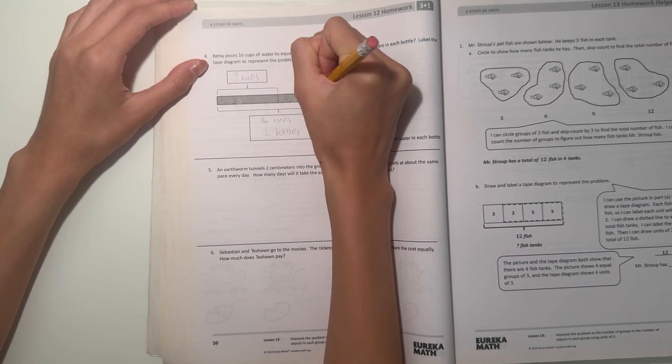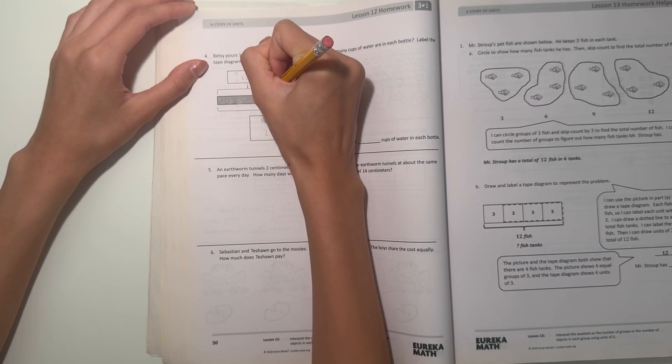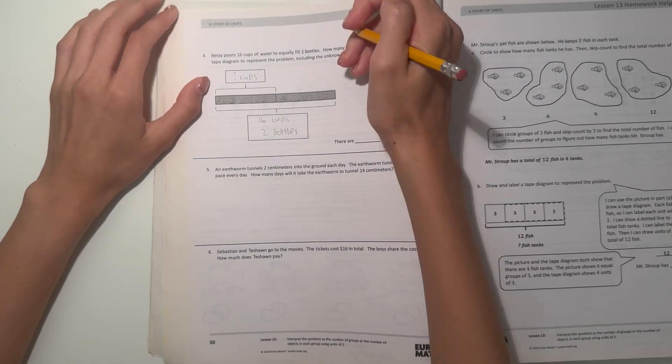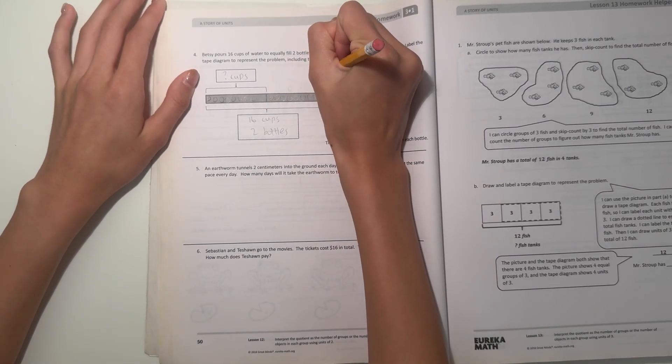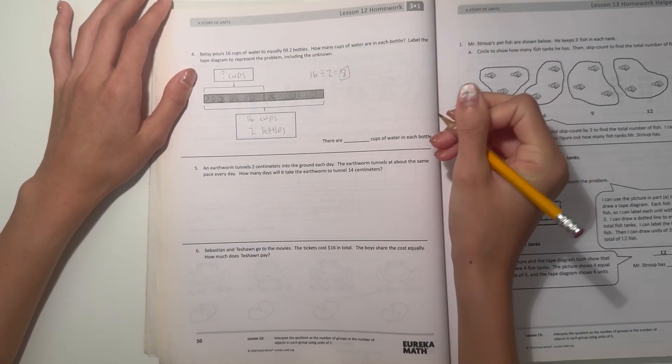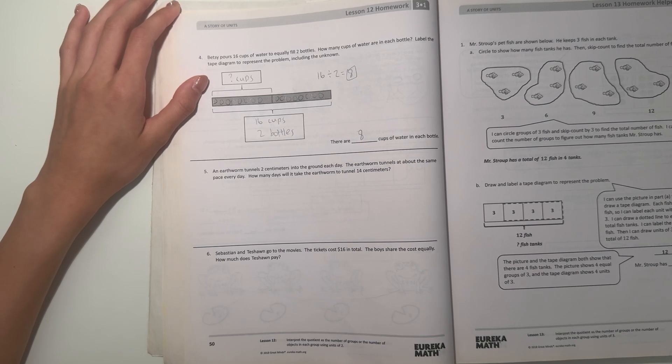15, 16. So this shows that there are 8 cups in each bottle, which means 16 divided by 2 is 8. So there are 8 cups of water in each bottle.